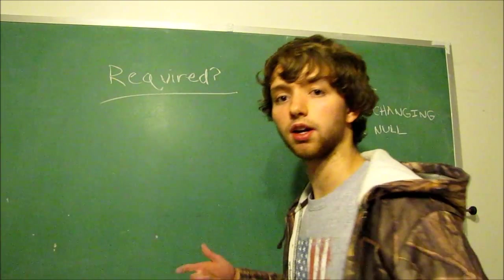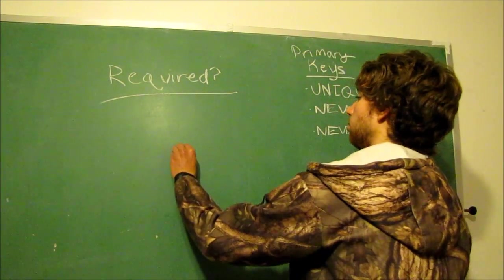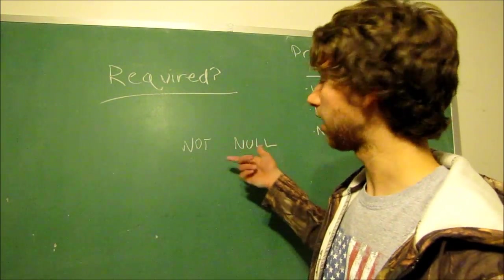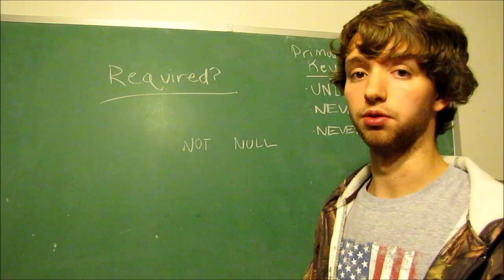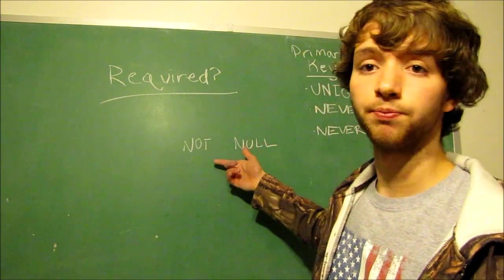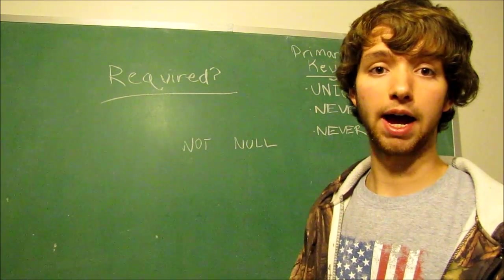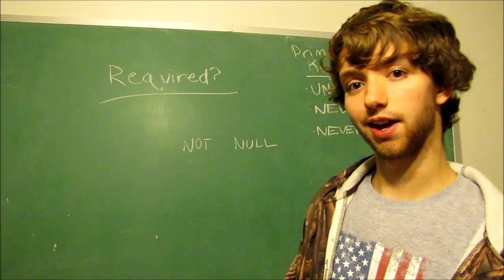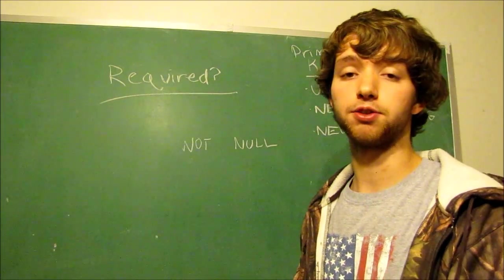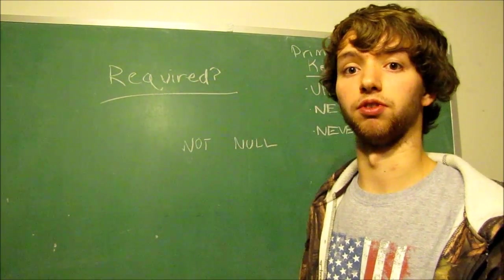This is going to dictate what kind of values we can put within our table. Back to the fax machine, if we have it to where it's not null, that means every single row has to have a value. That also means that if someone doesn't have a value, they might not be able to put any information in this table. By putting this restriction, you're eliminating all rows that aren't going to have a value. So if the case is where you do want people who don't have fax machine numbers to be able to enter data into your table, then you would not want to use not null as a characteristic.